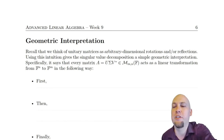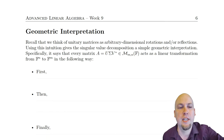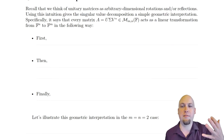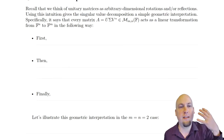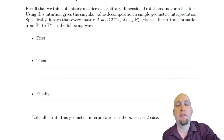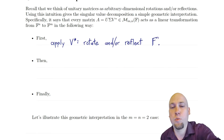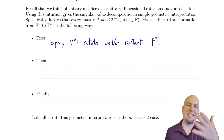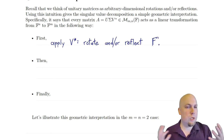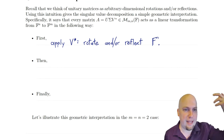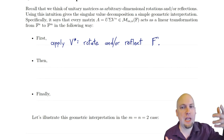This gives us a nice geometric interpretation of linear transformations or matrices. It says that first, every linear transformation — what it does is it applies V*, it rotates and/or reflects the input space F^n.